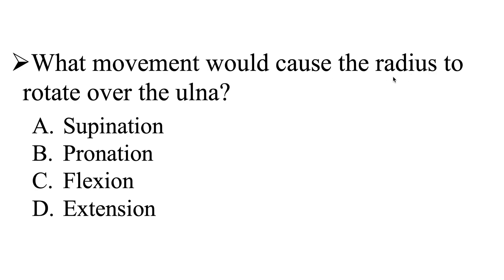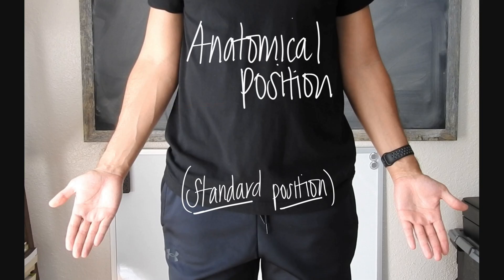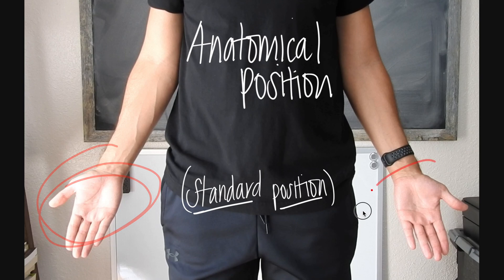"Rotate" is a very important key word here — rotate over the ulna. First things first, we always want to make sure we are referring to the body in the anatomical position. Anytime we're talking about an anatomical structure or movement, we need to refer to the body in anatomical position. That is very, very important. We are standing straight upright, arms at our side, and palms facing forward.